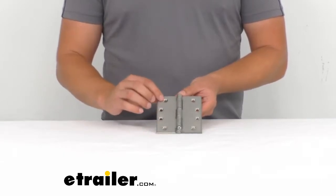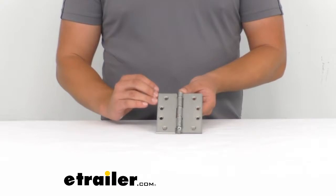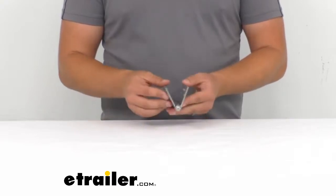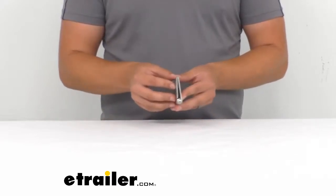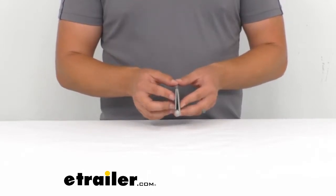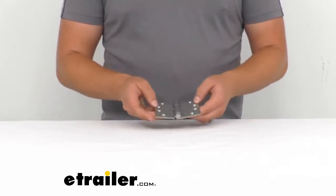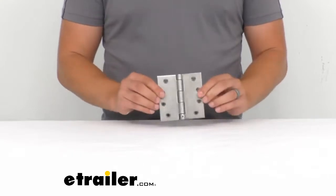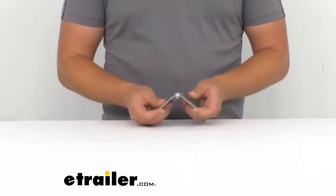Those countersunk holes will let the screws or bolts sit down nice and flush with the metal here, so that should eliminate any sort of clearance issues when you've got the hinge open or closed. In addition to that quarter inch diameter for the holes, you're also going to have a quarter inch diameter for the pin right here.